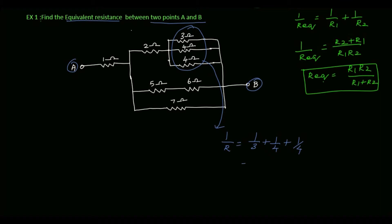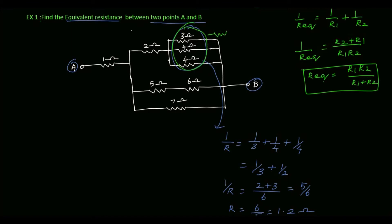1 by 4 plus 1 by 4 gives 1 by 2. So 1 by 3 plus 1 by 2 — taking LCM of 6 — gives 2 plus 3 which equals 5 by 6. So 1 by R equals 5 by 6, therefore R equals 6 by 5, which is 1.2 Ohm. Now we can replace these three resistors by a single resistor of 1.2 Ohm. Here the 5 Ohm and 6 Ohm resistors are connected in series, so the equivalent resistance is 5 plus 6 which equals 11 Ohm.